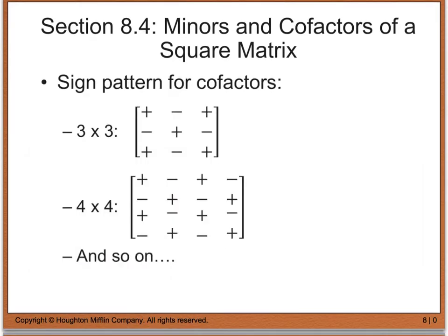Before we do an example, for a 3 by 3, the sign pattern for your cofactors is: row 1 column 1 is positive, row 1 column 2 is negative, row 1 column 3 is positive. In the second row, the signs alternate — starting with negative, then positive, then negative. This alternating pattern continues for a 4 by 4, 5 by 5, and so on.